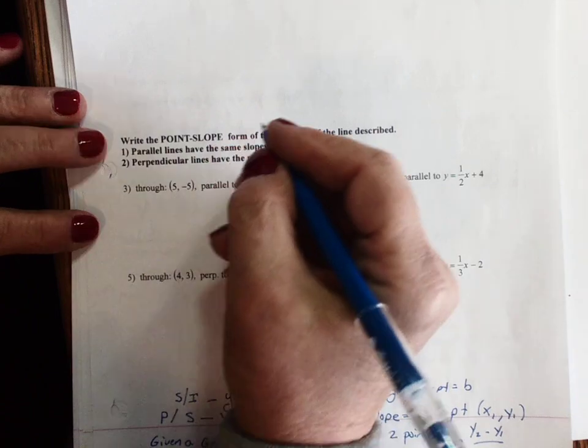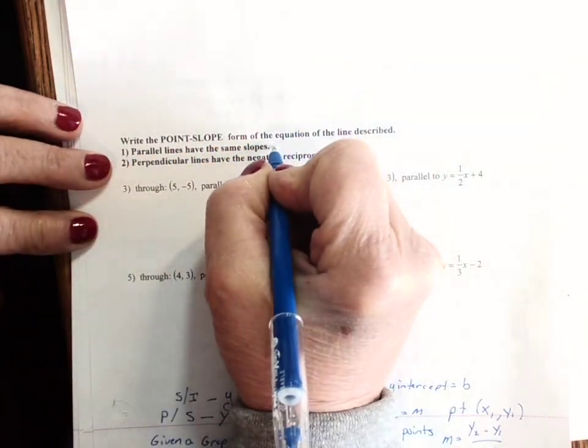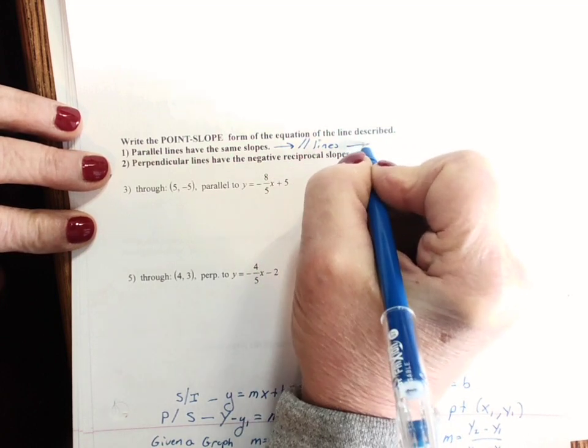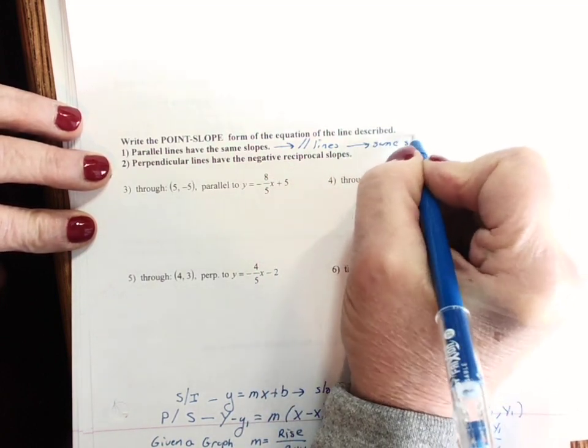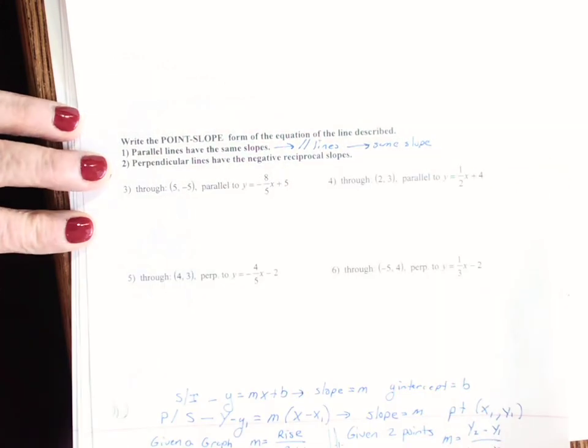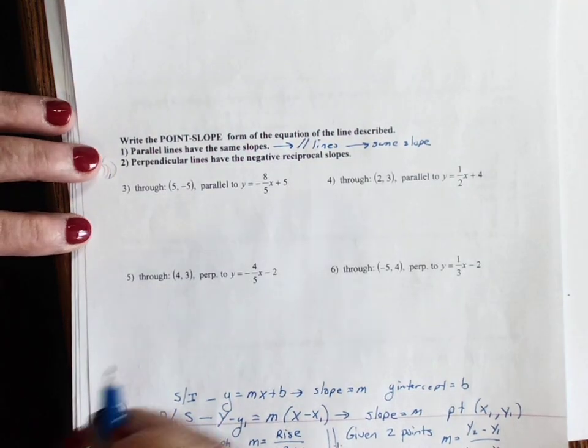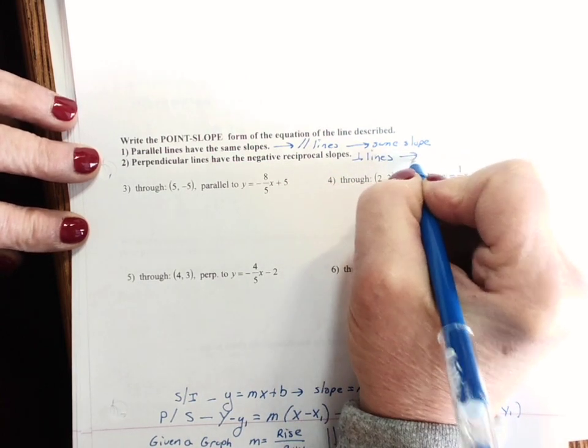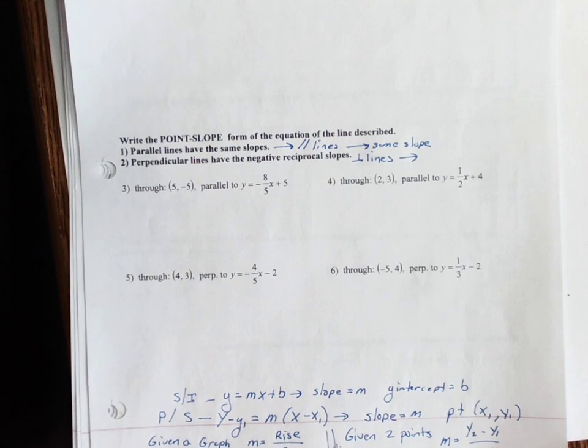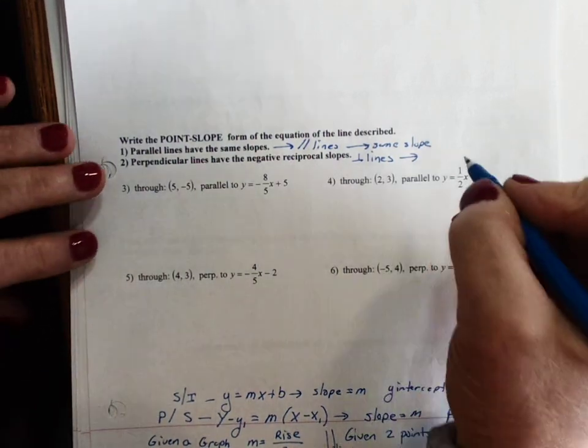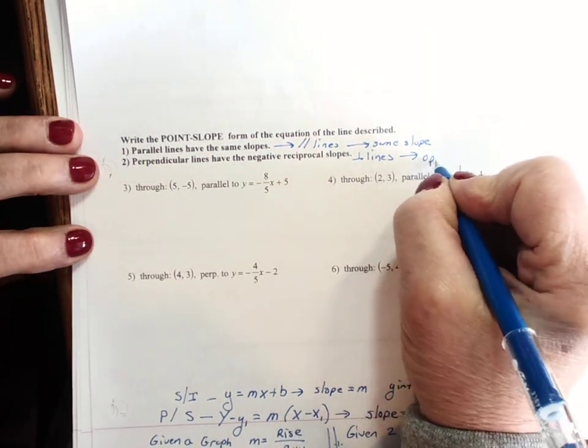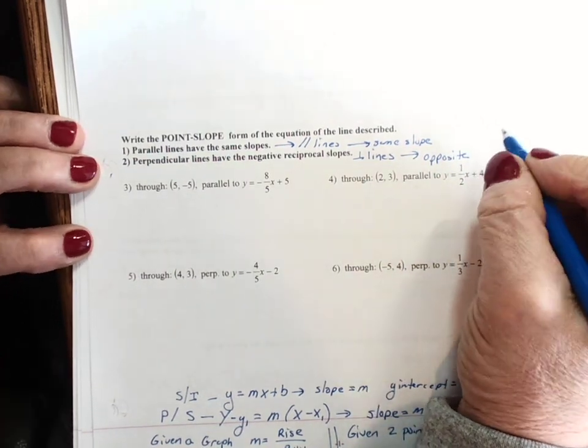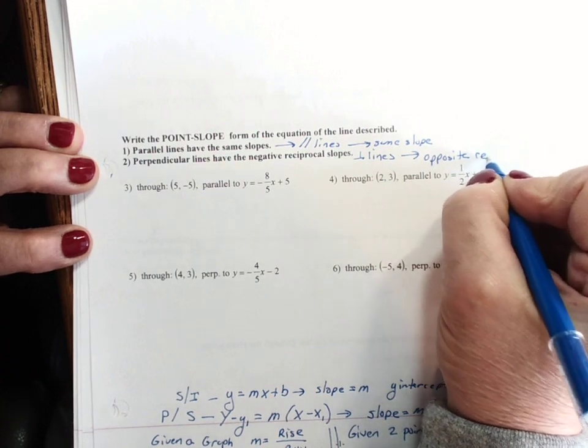On this test you are also going to need to know that parallel lines have the same slope and perpendicular lines have negative, but it might be easier for you to just say opposite. One's going to be positive, one's going to be negative, and the fractions are going to be reciprocals.